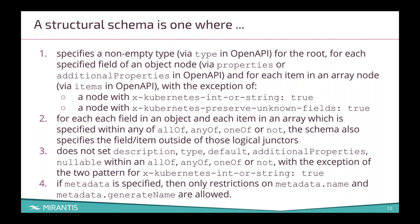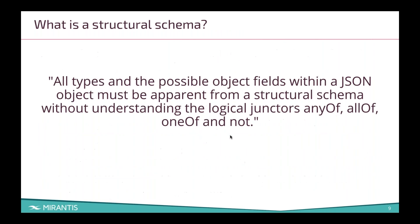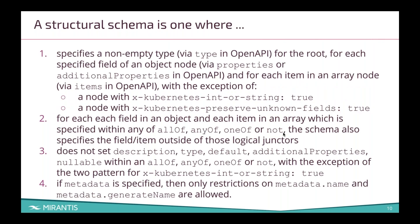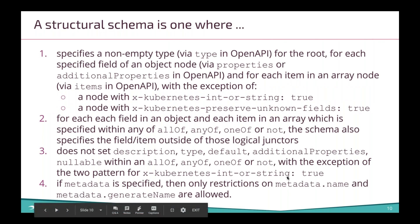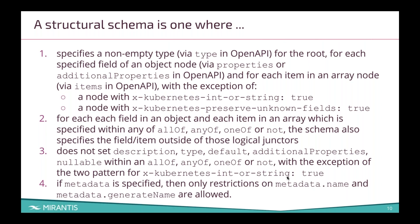There are actually four main rules. You need to make sure that you have an actual type for the object and for each property of the object, and that all of these are specified — not within any allOf, anyOf, and so on. You don't want to set the description, type, default, and so on inside any allOf's. And the only fields you can restrict on metadata are the name and generateName.